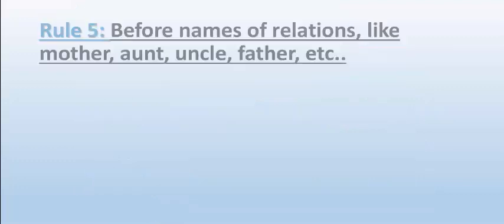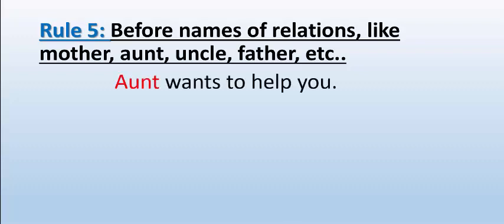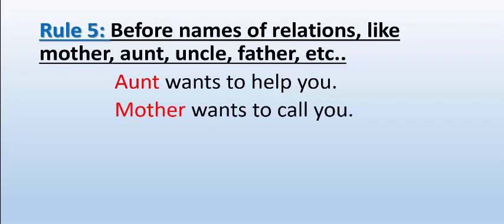Next rule: before names of relations like mother, aunt, uncle, father, etc., we don't use article. For example, 'Aunt wants to help you.' You cannot say 'The aunt wants to help you' — that is wrong. Similarly, 'Mother wants to call you.' So do not use article before names of relations.